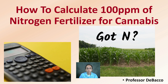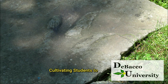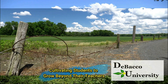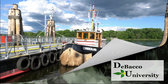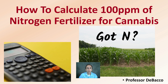This is a question I'm often asked: how do you calculate 100 parts per million of nitrogen fertilizer? Here at DeBaca University video, we're going to walk you through the process and exactly how you'd go about calculating. So grab your calculator and let's get into the video. We're going to go through how to calculate 100 parts per million of nitrogen fertilizer for your cannabis plants.